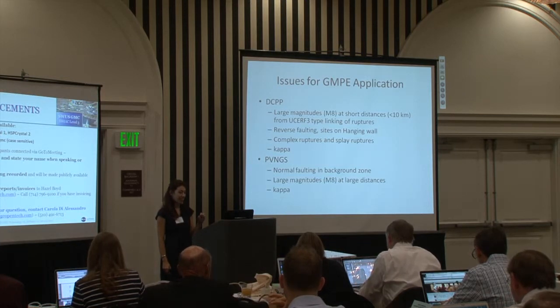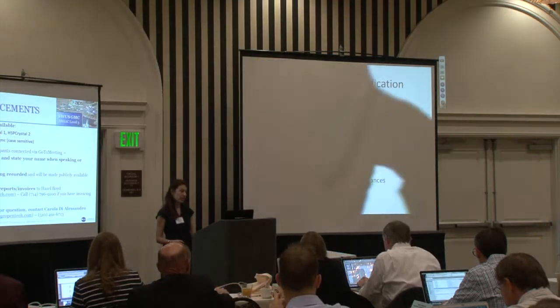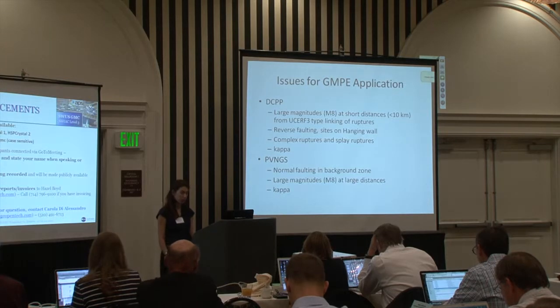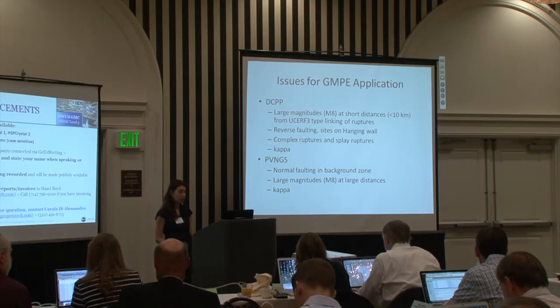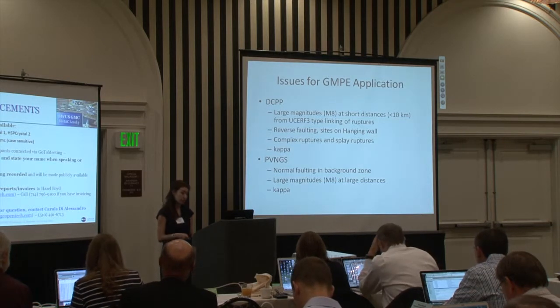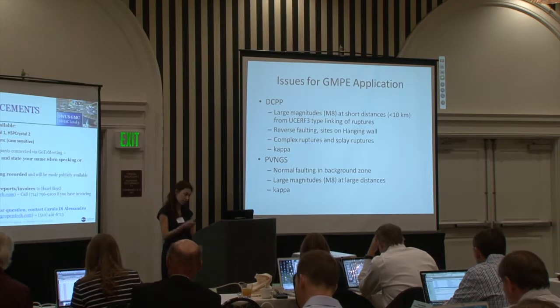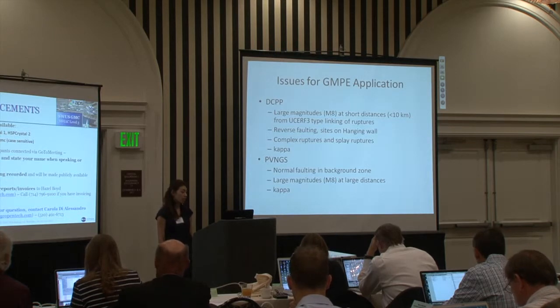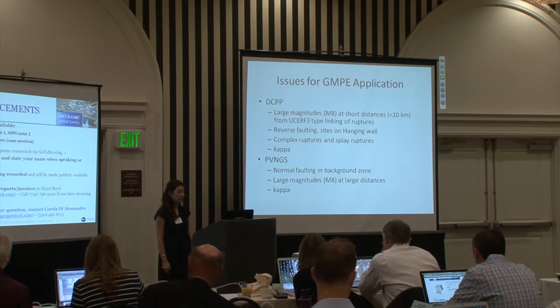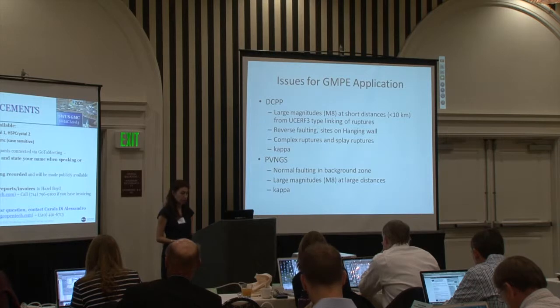We are going to provide the Kappa discussions instead of the proponent presentation by Jenny Watson-Lamp, who couldn't join us today. For Palo Verde Nuclear Generating Station, from the tornado plot it's very evident that what really impacts the hazard are the normal faults in the background zone. At longer periods, large magnitude at large distances originated in California are also important. It will be important to define proper attenuation rate and evaluate if the attenuation in Arizona is significantly different from California, where the majority of candidate models have been calibrated. Kappa and near-source scaling are also important for Palo Verde.